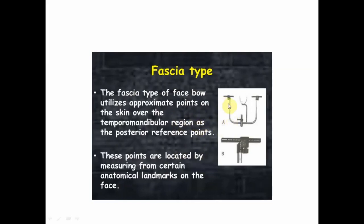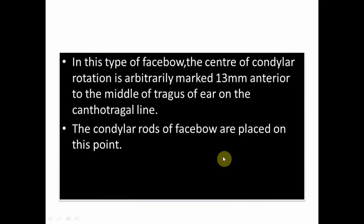The fascia type of facebow utilizes approximate points on the skin over the temporomandibular joint as the posterior reference points. The points are located by measuring certain anatomic landmarks on the face. In this type of facebow, the center of condylar rotation is arbitrarily marked 13 millimeters anterior to the middle of the tragus of the ear on the cantho-tragal line — that is, a line from the outer canthus of the eye to the tragus of the ear.